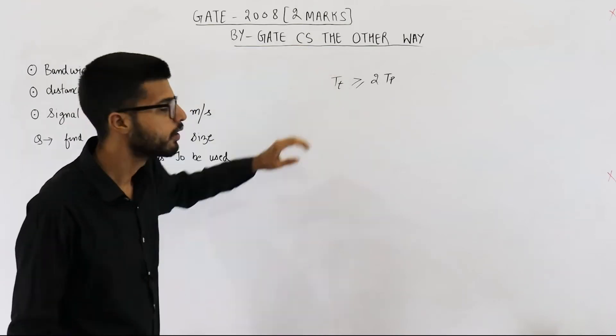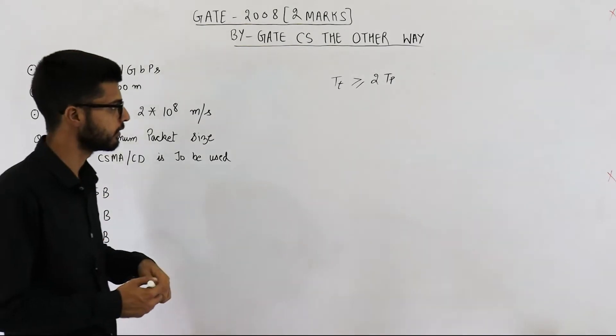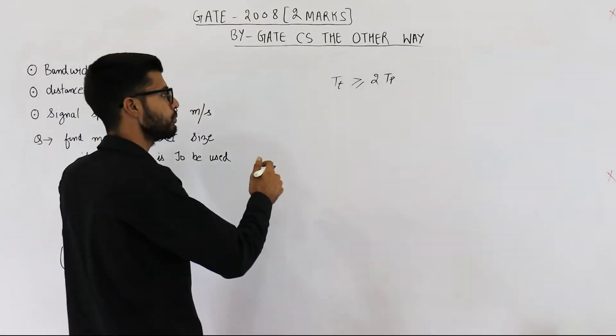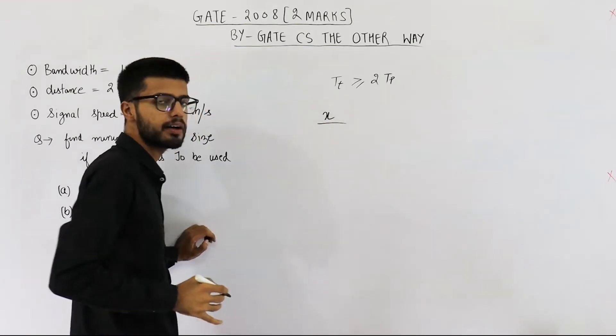So from this relation, we can easily determine what is the length of packet. See tt or the transmission time is length of packet. Suppose it is x divided by the bandwidth.